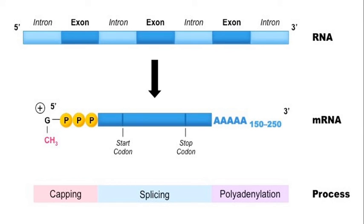These are the post-transcriptional changes in messenger RNA. After transcription, two things occur: introns are removed, and a cap and tail are added. When introns are removed and the cap and tail are added, primary RNA is converted into secondary or functional messenger RNA. Now the messenger RNA is ready to attach amino acids to form protein. That is all about post-transcriptional modification in RNA. Thank you all, take care.